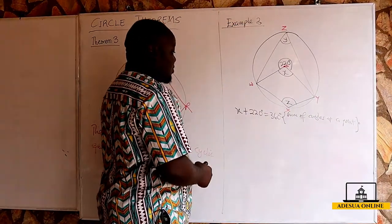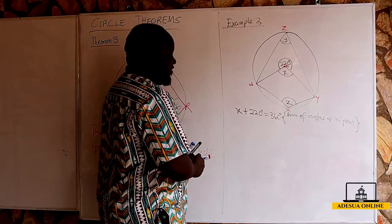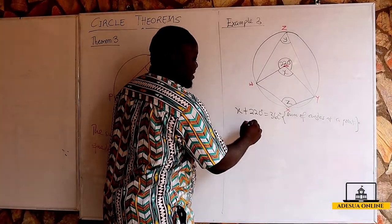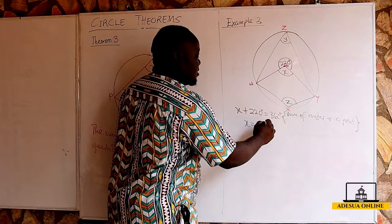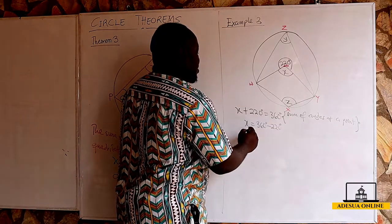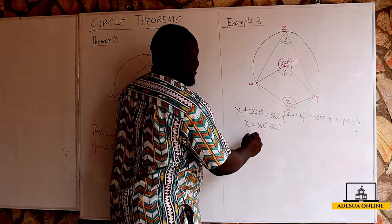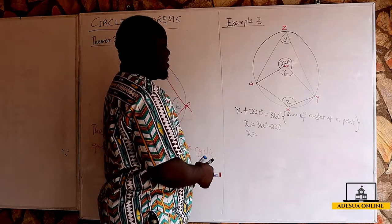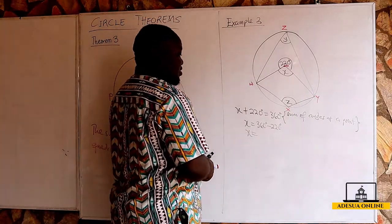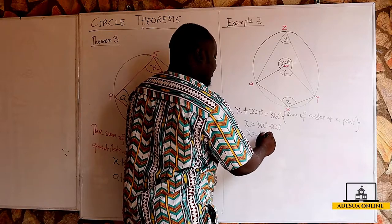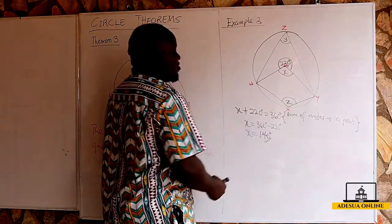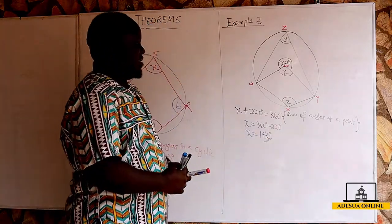We find X by calculating 360 minus 220 degrees, giving us X equal to 140 degrees.